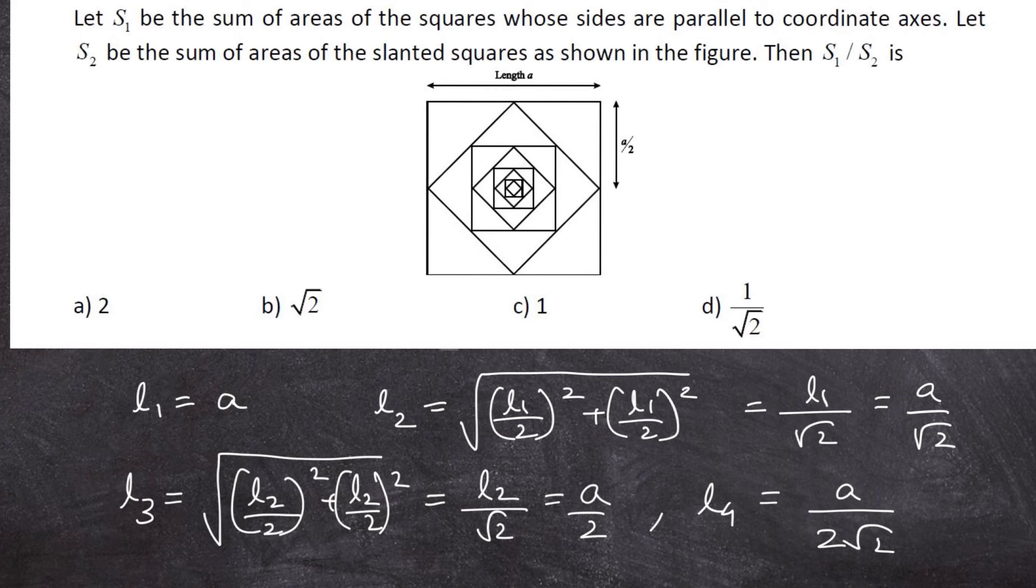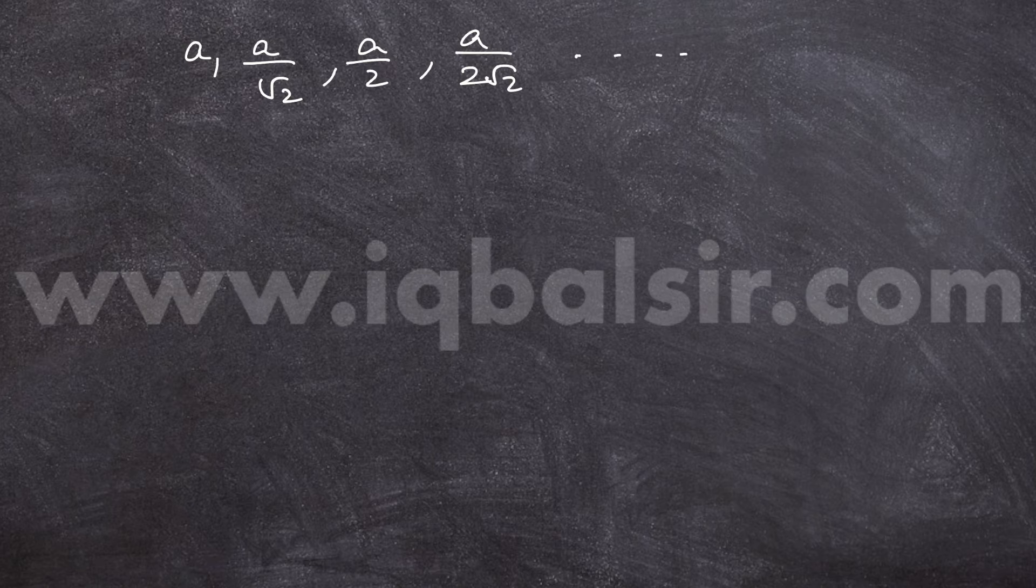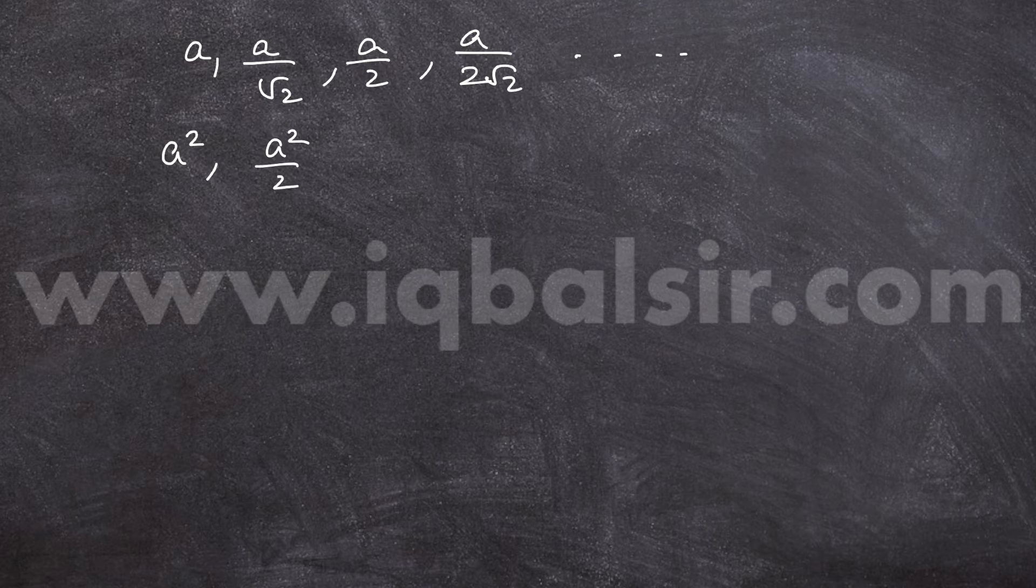So, we have a pattern here. The side lengths are A, A by root 2, A by 2, A by 2 root 2 and so on. And their respective areas are A square, A square by 2, A square by 4, A square by 8 and so on.